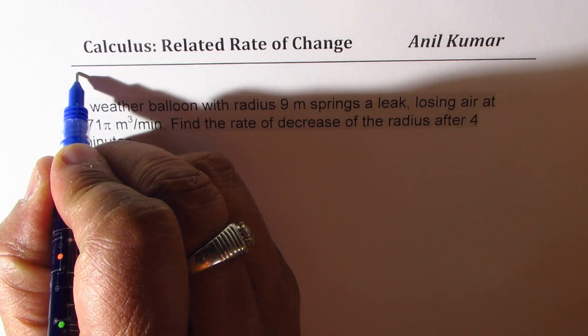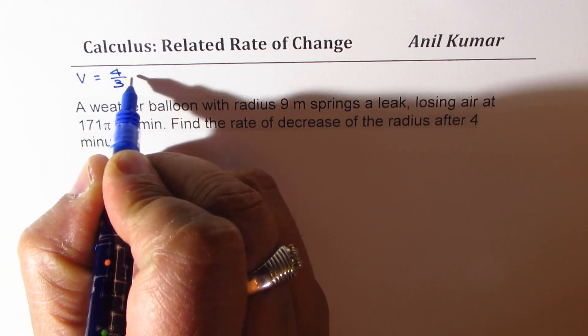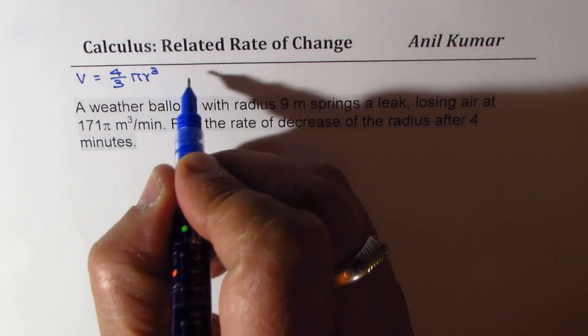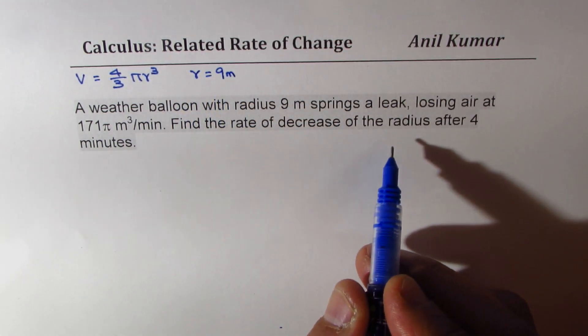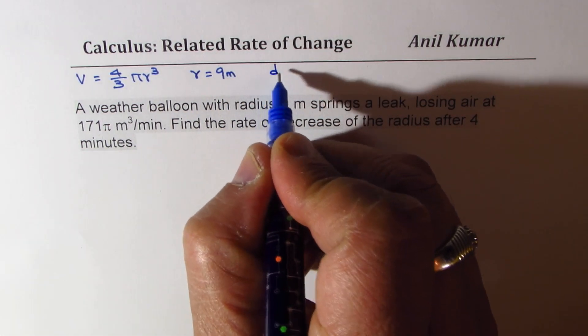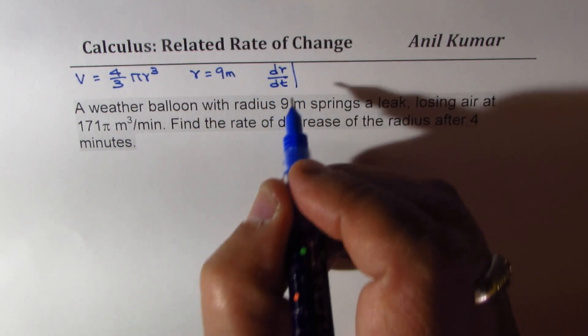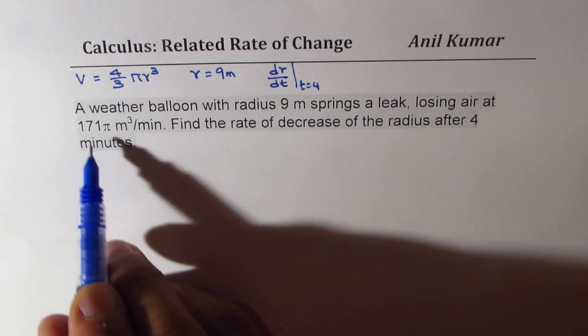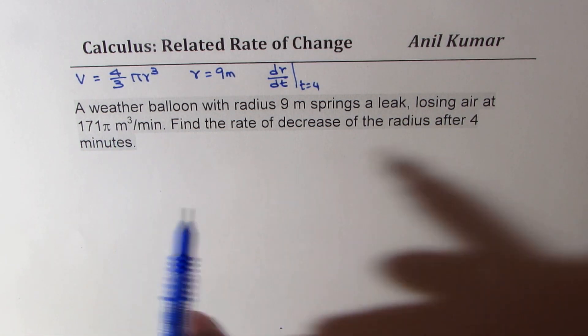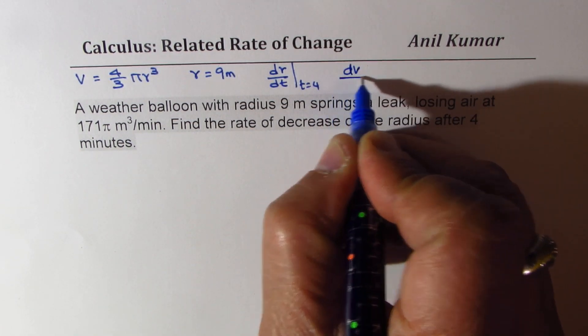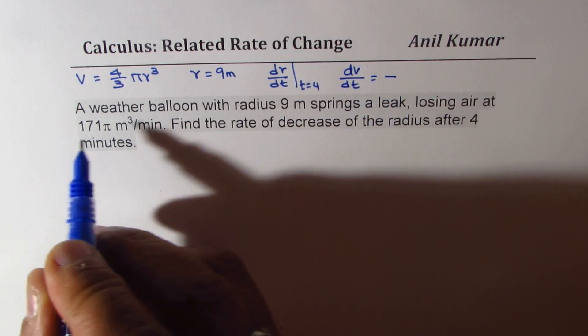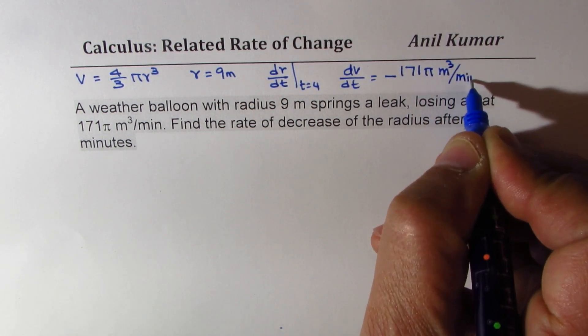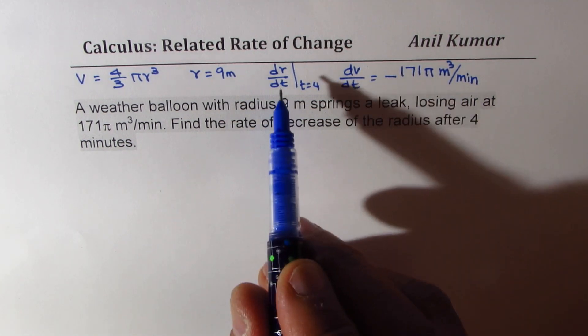Let me give you the formulas here. We're talking about a spherical balloon, so volume will be V = 4/3 πr³. We are given that the initial radius is 9 meters. We need to find the rate of decrease in radius, that means dr/dt when time is 4 minutes. When we say it's losing air at 171π m³/min, that is change in volume, so dV/dt = -171π m³/min.